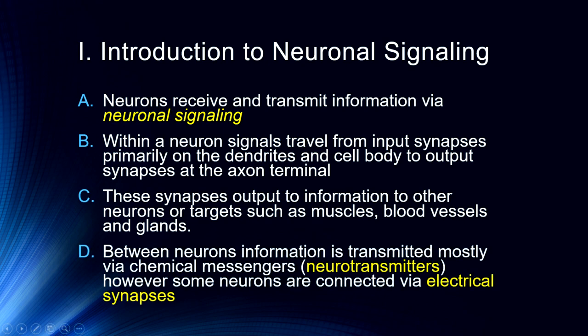Between neurons, information is transmitted mostly by chemical messengers, which are neurotransmitters — we'll talk about neurotransmitter systems in a couple of upcoming lectures. There are some neurons that are connected via electrical synapses, which we'll briefly visit; this usually occurs for very rapid information. But for the most part, most information is transmitted via neurotransmitters across the synapse.